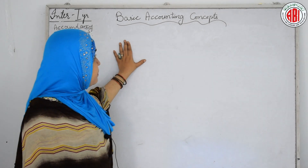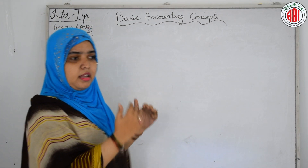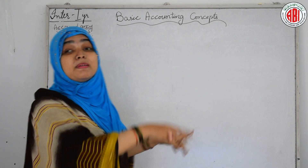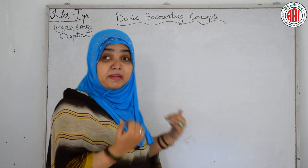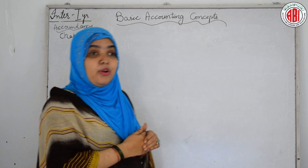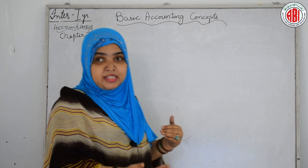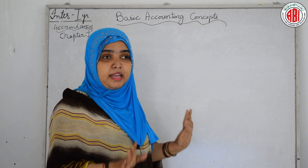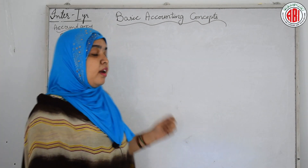Our next basic accounting concept is creditors. What are creditors? Creditors are exactly opposite to debtors — they are those persons to whom the business has to pay the amount. Our business has borrowed money from them, and we have to pay them back. We may tell them that our business is not earning profit currently, we are suffering losses, so please give us some time — after the end of the financial year, or three or four years, we are going to repay your loan. Those persons are our creditors.